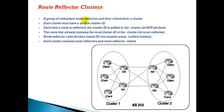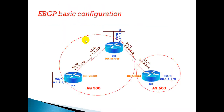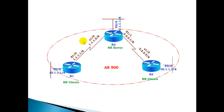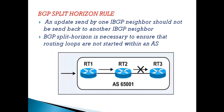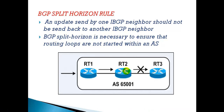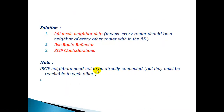In this section I am going to explain the route reflector concept using clusters. Going back to our previous topics, we have seen the BGP split horizon rule, which says that an update sent by one IBGP neighbor should not be sent back to another IBGP neighbor. To overcome this, the possible solutions are: full mesh neighborship, a route reflector concept, or BGP confederations, especially if your transit AS is very big.